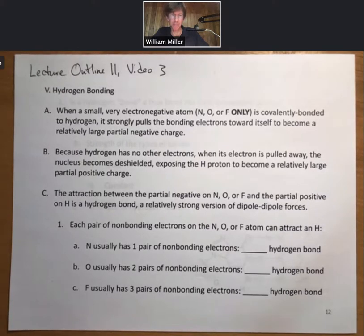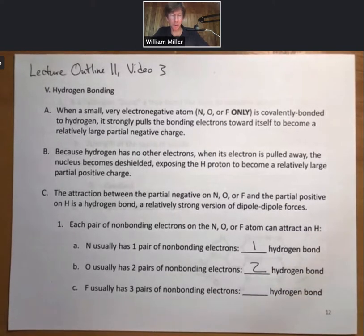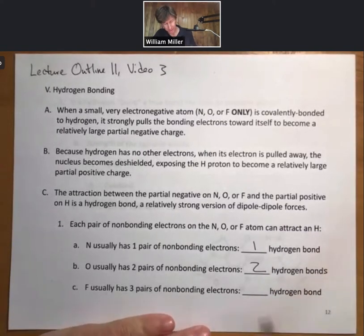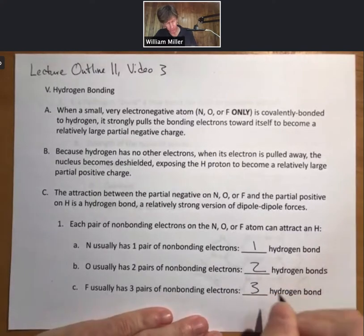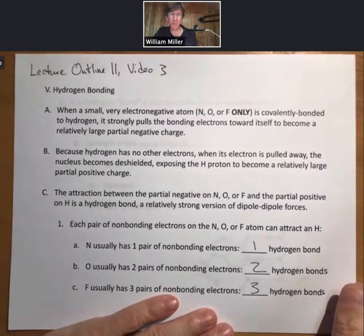Each pair of non-bonding electrons on the nitrogen, oxygen, or fluorine atom can attract a hydrogen. Nitrogen usually has one pair of non-bonding electrons and will form one hydrogen bond to that pair of electrons. Oxygen has two pairs and will form two hydrogen bonds. Fluorine has three pairs of non-bonding electrons and will form three hydrogen bonds, as we'll see.